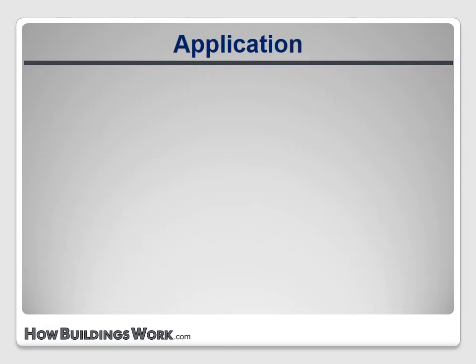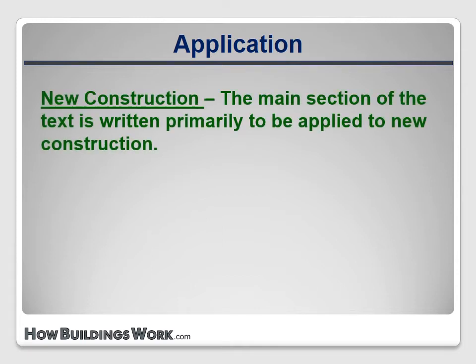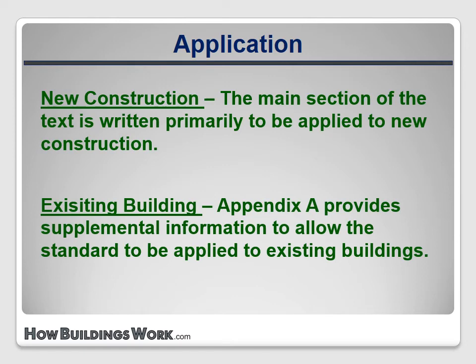ASHRAE Standard 62.2 was written primarily to apply to new construction. It assumes that all the specifications can be implemented with relative ease by the builder during construction. But in existing buildings, it may not be so easy — for example, to add a range hood to the kitchen. There may be structural or budgetary hurdles that make it difficult, so an appendix is also included that provides guidance on applying the standard to existing buildings.